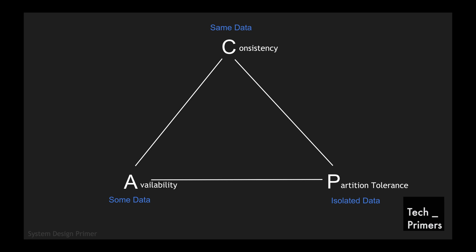Putting it all together in the CAP theorem: Consistency stands for same data, Partition Tolerance stands for isolated data, and Availability stands for some data. The CAP theorem states you can choose only two of these. Let's look at the trade-offs by choosing one over the other with real examples.